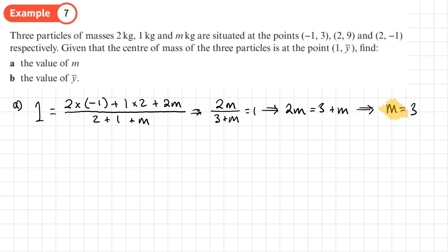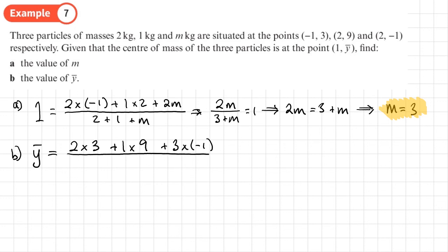Part B: find Ȳ. Now that we know M = 3, we substitute it in. Take each mass times its Y coordinate: (2×3) + (1×9) + (3×(−1)), divided by (2 + 1 + 3). That gives 12 over 6, so Ȳ = 2.